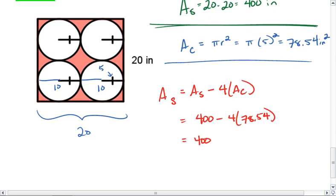We get 400 minus, let's see, 314.159, which gives me approximately an area of 85.841 inches squared.